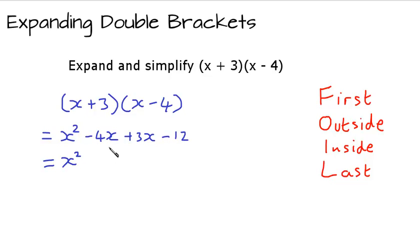We've got negative 4x plus 3x. Negative 4 plus 3 is negative 1, so that leaves us with negative 1x, which we just write as negative x. And then we've got our negative 12 there. So expanded and simplified, x plus 3 brackets x minus 4 becomes x squared minus x minus 12.